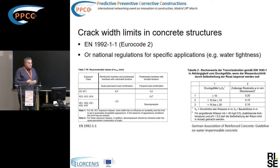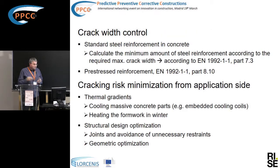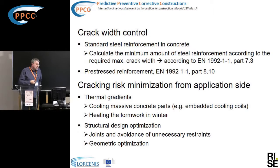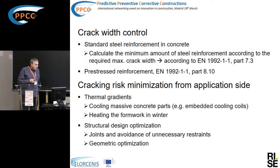How do we control cracks? From the engineering point of view there are precautions, usually done by the amount of reinforcement and how it is arranged. Guidance is given by the Eurocodes and national guidelines, which prescribe how much reinforcement needs to be calculated to limit crack width. The Eurocodes also provide information about pre-stress reinforcement in order to reduce crack width.